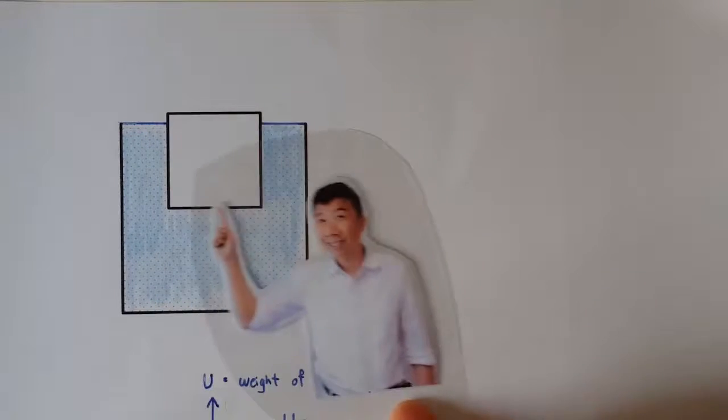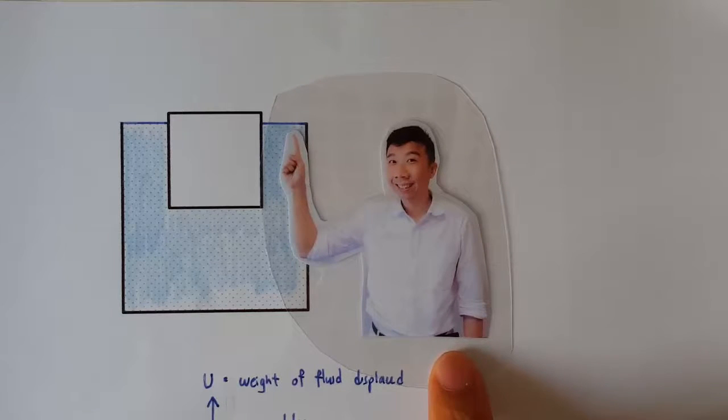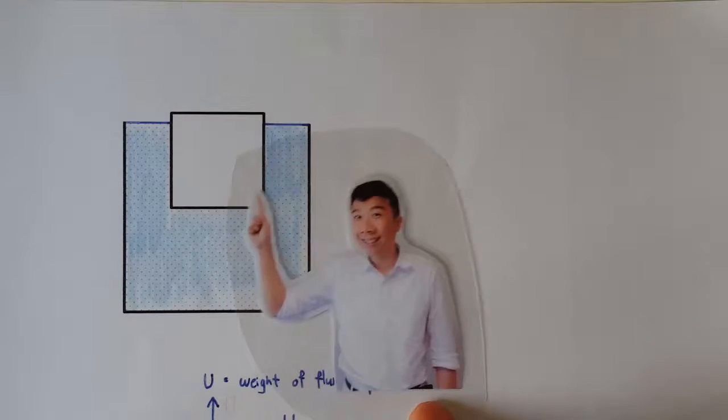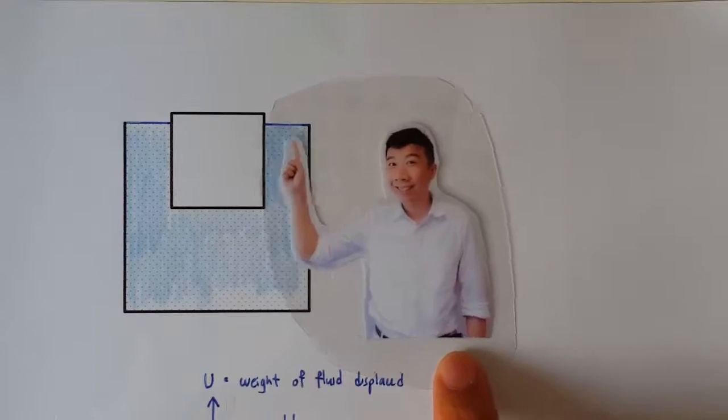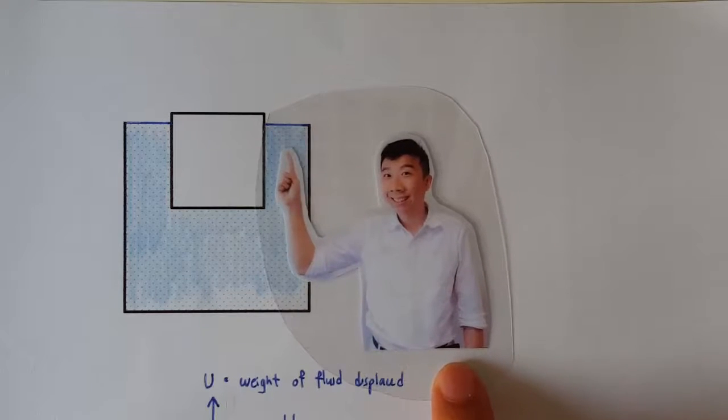Hello, we have an ice cube floating in a cup of water, and the cup is filled to the brim. The question is, after the ice has melted, should the water level increase (that means overflow), or should it stay the same, or should it become lower?